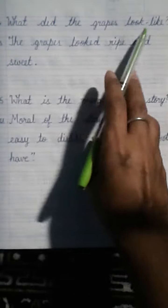Question number 4. What did the grapes look like? Answer. The grapes looked ripe and sweet.